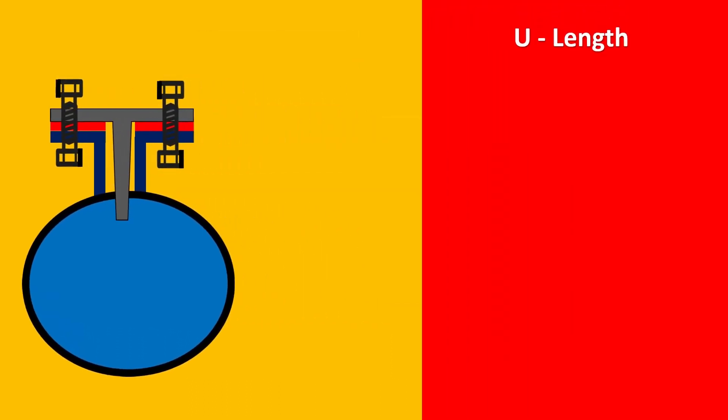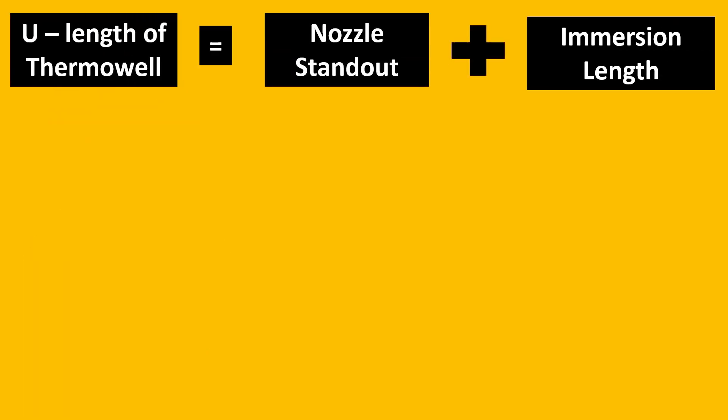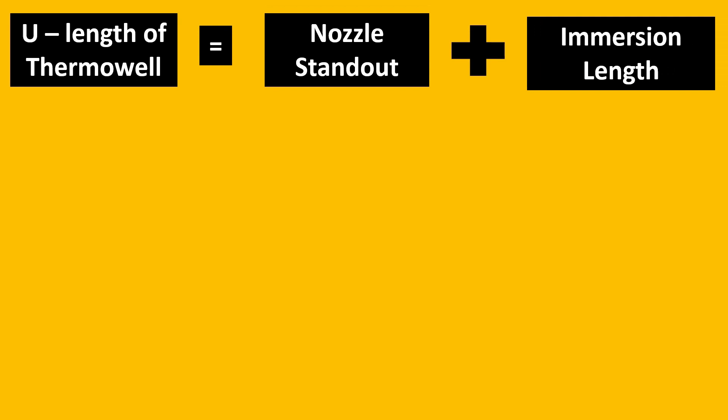Now to calculate U-length you need to know two amazing criteria: the immersion length and the nozzle standout. These are very important. Will you agree with this statement if I tell you that U-length of a thermowell is in simple words nothing but the nozzle standout plus the immersion length?